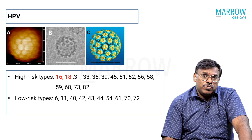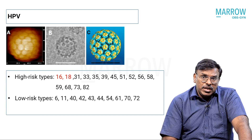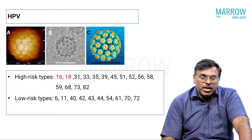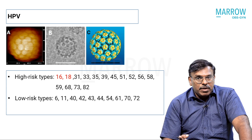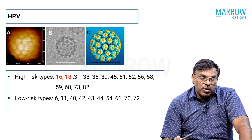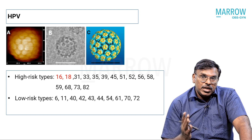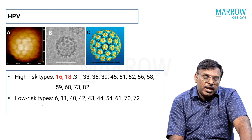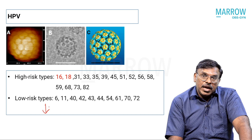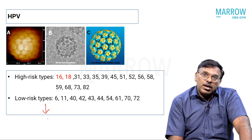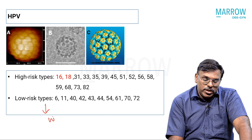There are more than 200 types of HPV viruses, and of these you have the low-risk and the high-risk types. They are divided into various types based on their genome configuration. The low-risk types are actually associated with benign lesions like genital warts.